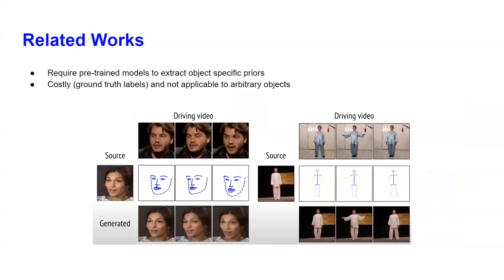Let me share some related work. Before this model, existing models require pre-trained models to extract object-specific priors such as 3DMM parameters of a face or key point detectors before applying the model, which was costly because it required ground truth labels and not applicable for arbitrary objects, which means that for every object we want to infer, we need to provide some training examples.